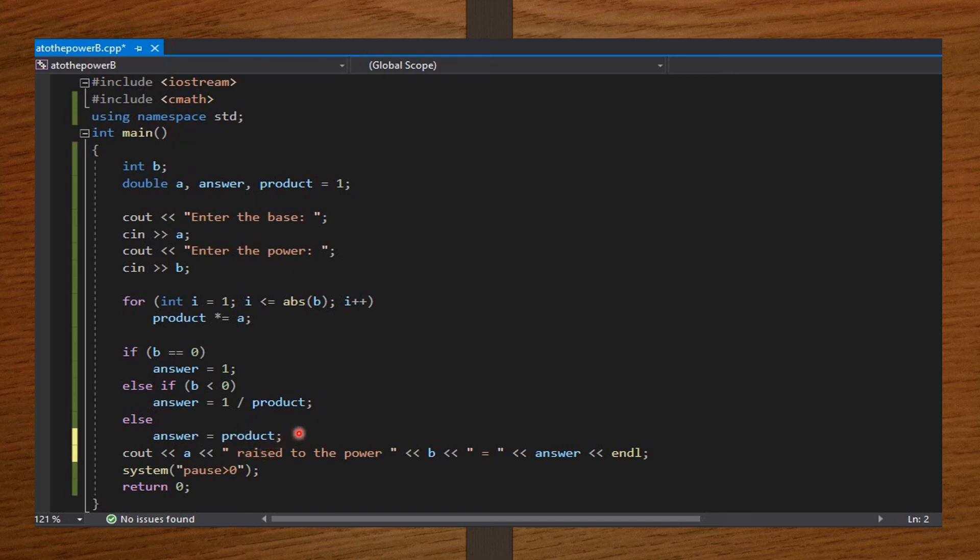Then, from there, I print out the result that cout a raised to the power b equals the answer, end line. Then, I end the code with system pause greater than 0 and then return 0.